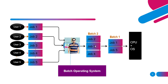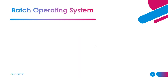This is how the batch processing system works. The operator collects jobs from different users and, based on the similarities of the jobs, makes batches, and then sends them to the CPU and operating system for further processing.